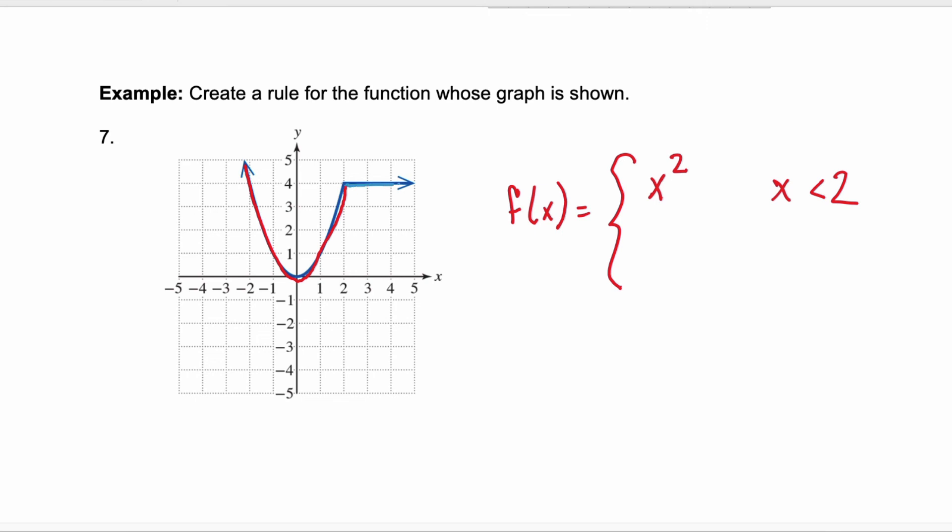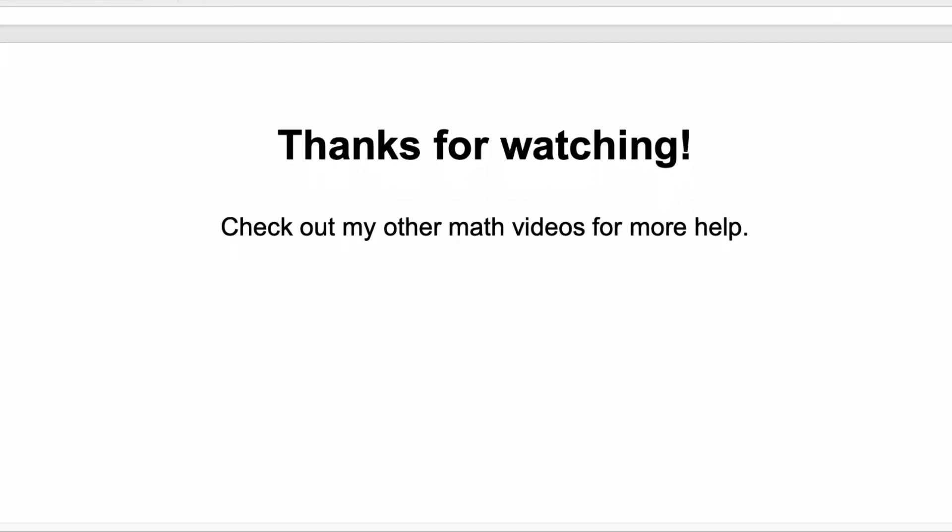After that we have this chunk. So x greater than or equal to 2, right? Everything to the right of x equals 2 is going to be this horizontal line. And remember a horizontal line is a constant function and our constant here is 4. So here's our piecewise function. For x less than 2 it's the squaring function x squared and when x is equal to or greater than 2 we have the constant function of 4. Thank you for watching. I hope you found this video helpful and I hope you'll check out some of my other math videos.